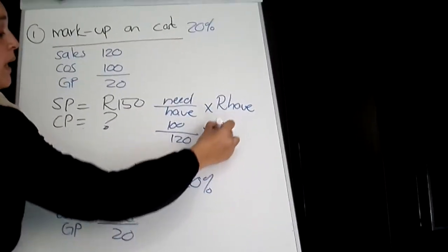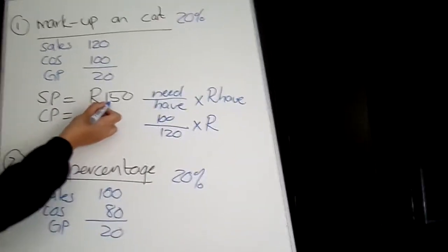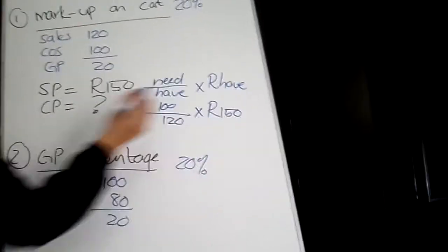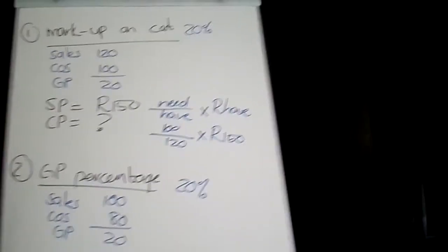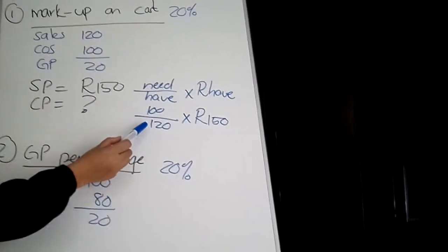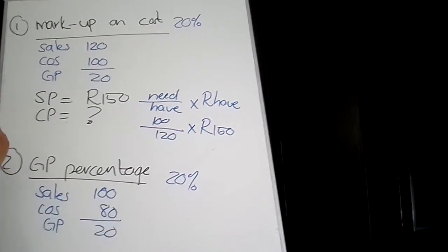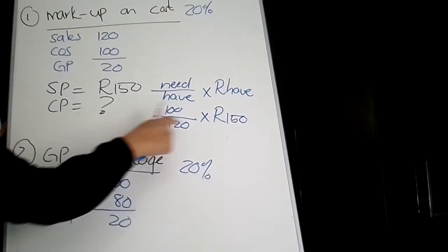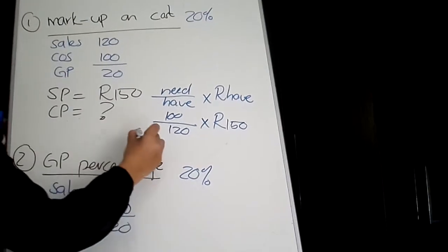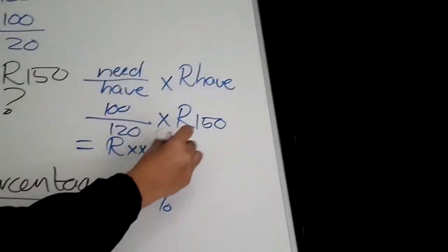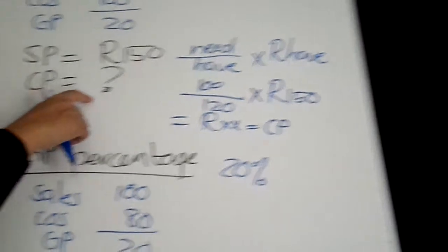And we'll multiply it by the Rand value of what I have, which is R150. So 100 divided by 120 times R150 will give you the answer for the cost price, which is what was required.